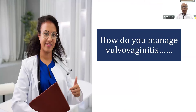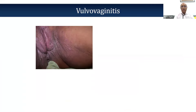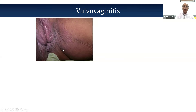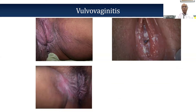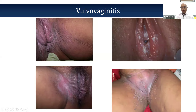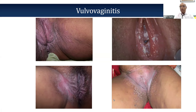Similarly, candida causes vulvovaginitis — patients present with erythema and satellite lesions, small erythematous papules, which are a hallmark of candida infection. Sometimes they present with a curd-like discharge. When it becomes chronic, they present with erythema, lichenification, and itching. In chronic disease, lichenification with satellite lesions again — these satellite lesions are diagnostic of candida infection.